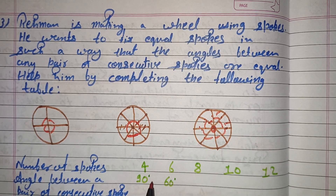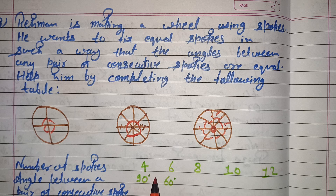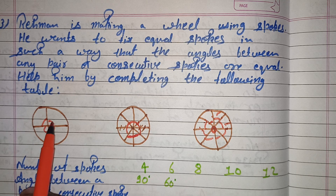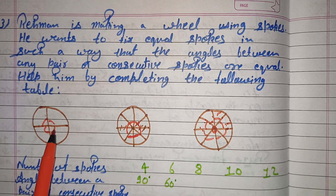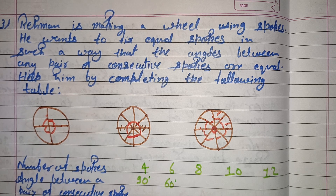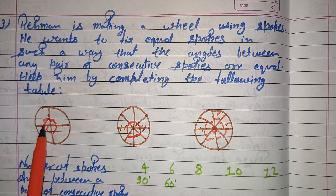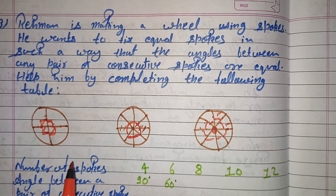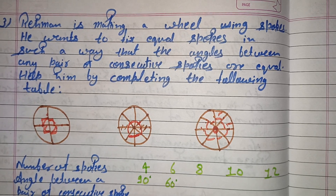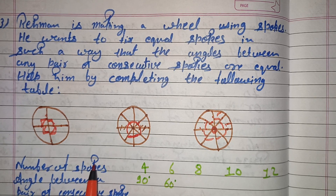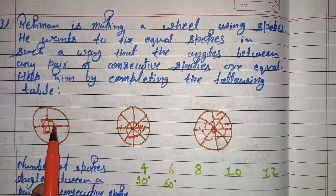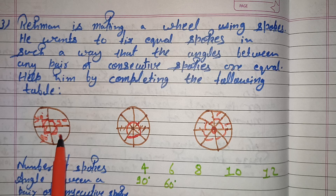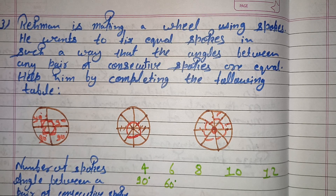If we keep 4 spokes, the angle between consecutive spokes is 90 degrees. So with 4 spokes, we have 4 pairs, each with a 90-degree angle. The 360 degrees is equally distributed, giving 90 degrees for each consecutive pair.